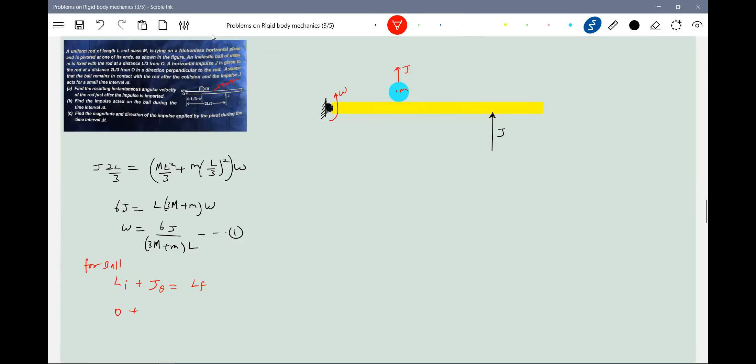What was the initial angular momentum of the ball? Then it's asking to find the impulse acted on the ball during the time interval Delta T. So what impulse acted? Some J theta in fact acted on it. So I'll put some J dash or J B. And similarly, the J B will act on this one. So this J B into L by three equal to L final minus L initial.